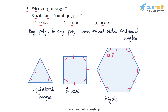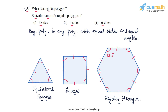So these are the answers to the 3 parts: a regular polygon of 3 sides is an equilateral triangle, a regular polygon of 4 sides is a square, and a regular polygon of 6 sides is a regular hexagon. This completes question number 5.